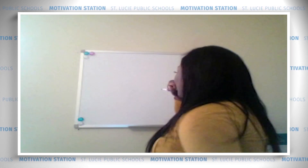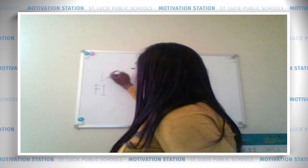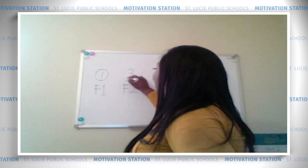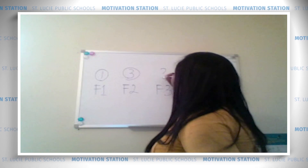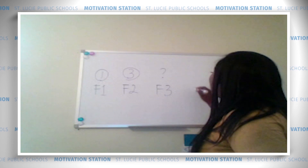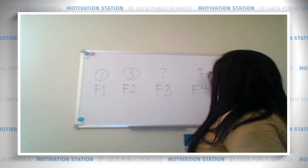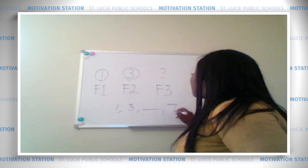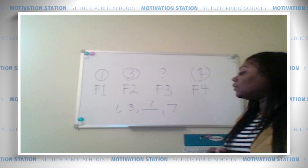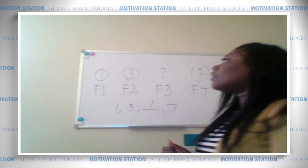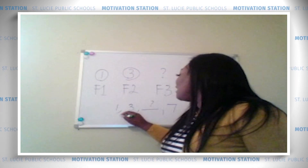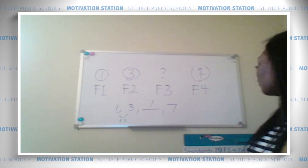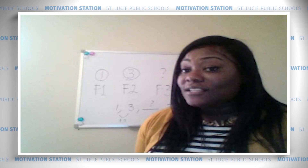Go ahead and write this down. Figure one had one tile. When we moved across to figure two there were three tiles. Figure three had an unknown number of tiles in that term, and figure four had seven tiles. From one to three, the terms increase by two. If I go back to my key idea — analyze the change from one term to the next — that's going to be critical for us solving this problem.